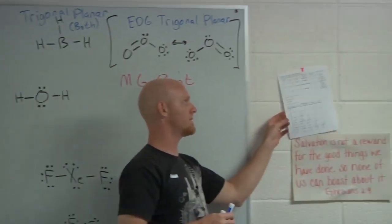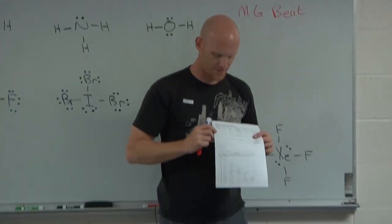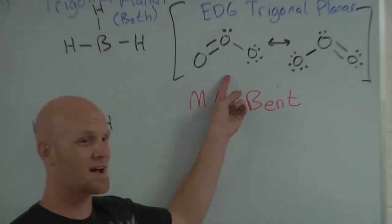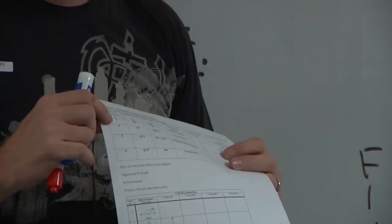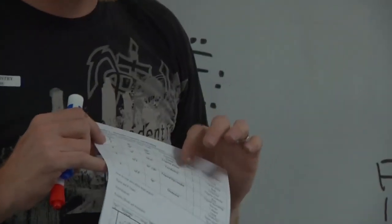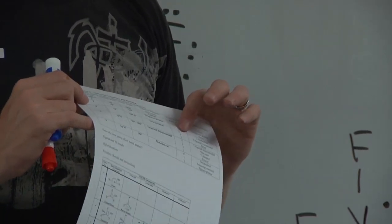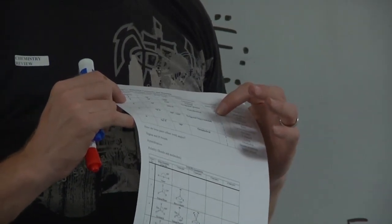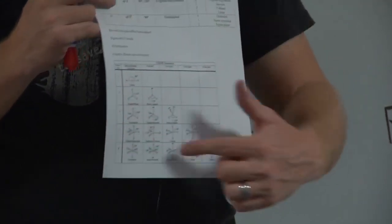Your handout has two tables — one includes depictions of the shapes. The first column gives the total number of domains. For ozone with three total domains, the electron geometry is trigonal planar. With zero non-bonding pairs the molecular geometry has the same name, but with one non-bonding pair the molecular geometry is called bent. The bottom table shows what all those shapes look like.